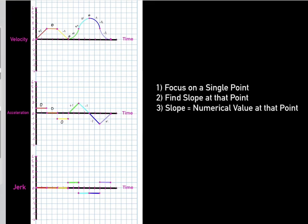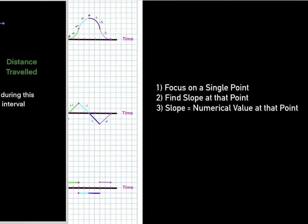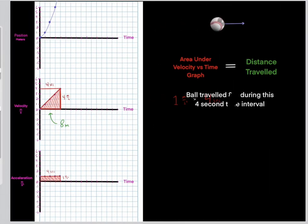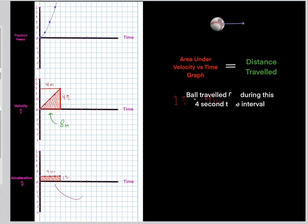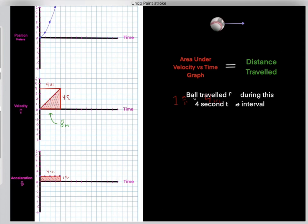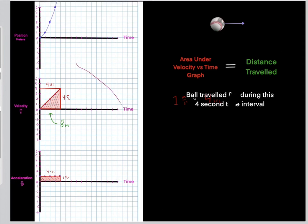I recommend taking a screenshot of this image. In the link below, there's a video where I'll teach you how to take a velocity versus time graph to infer the distance traveled during a time interval, and how to take an acceleration versus time graph to infer the change in velocity. These are very important rules you need to understand for physics and for the MCAT.